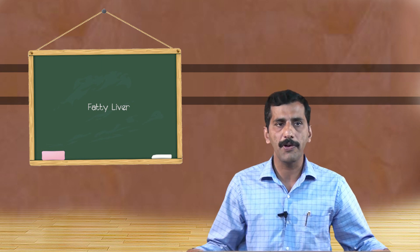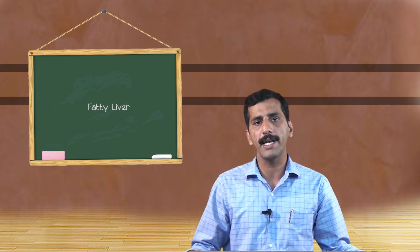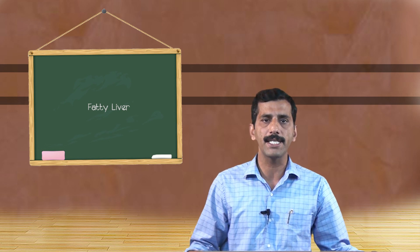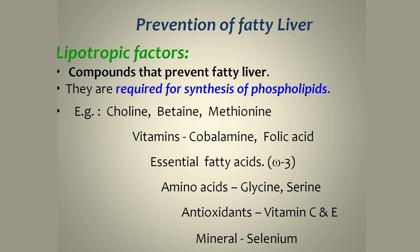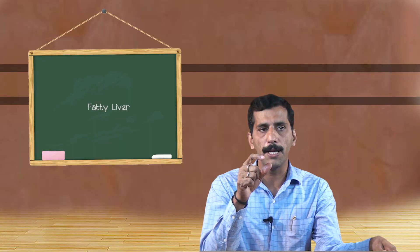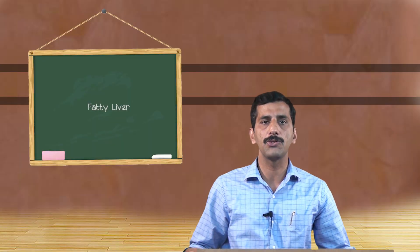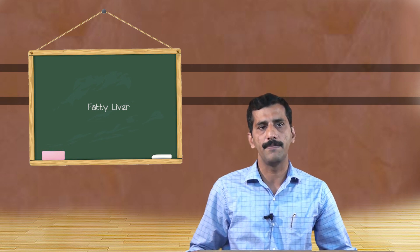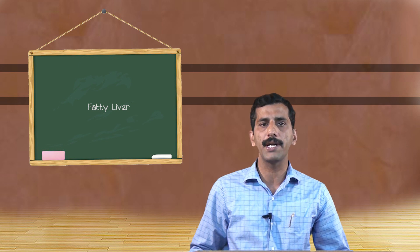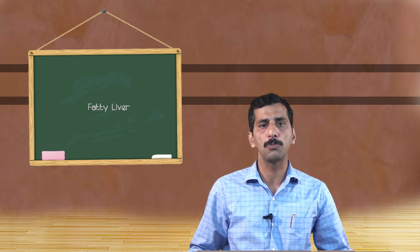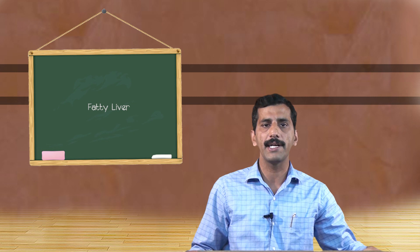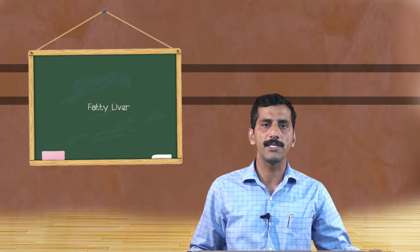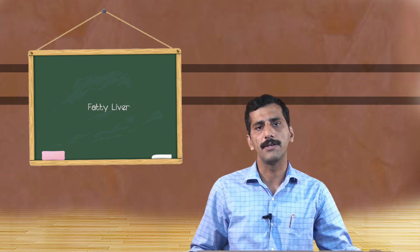Lipotropic factors like choline, betaine, and methionine are all very essential for the synthesis of the phospholipid lecithin. Lecithin is one of the major phospholipids present in the outer covering of VLDL. A deficiency of these lipotropic factors decreases the synthesis of VLDL. Essential fatty acids are also very important for the synthesis of various phospholipids, as each phospholipid contains a second fatty acid position bound to an essential fatty acid, so a deficiency of essential fatty acids also decreases VLDL synthesis.